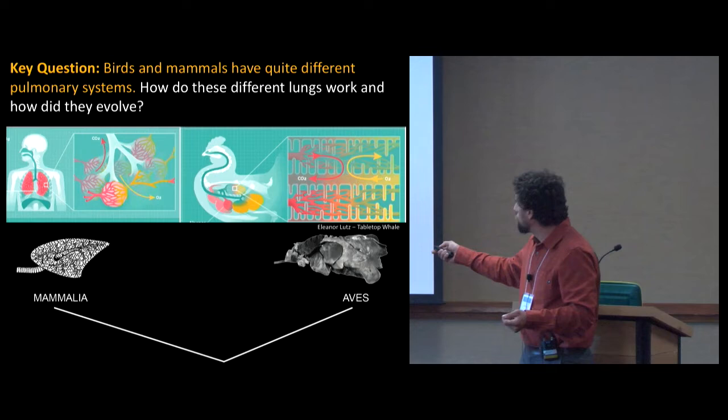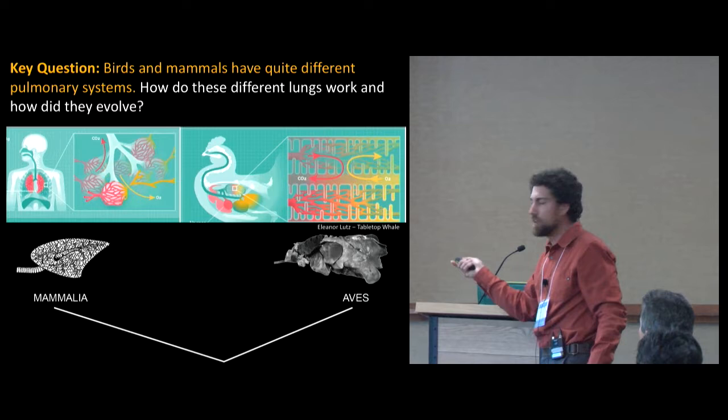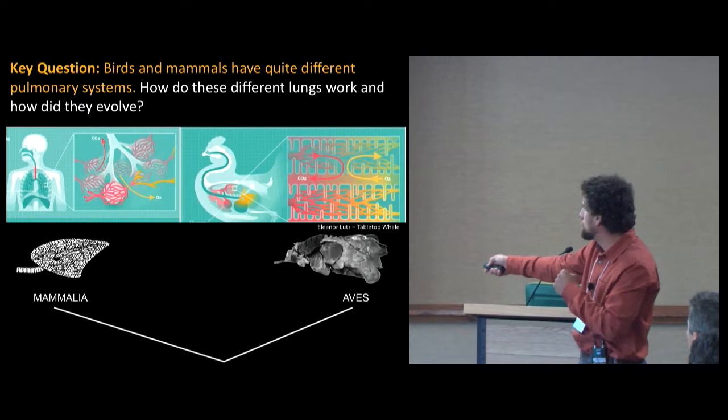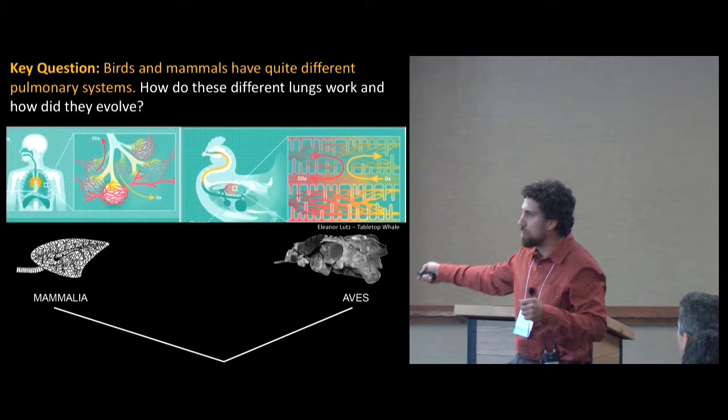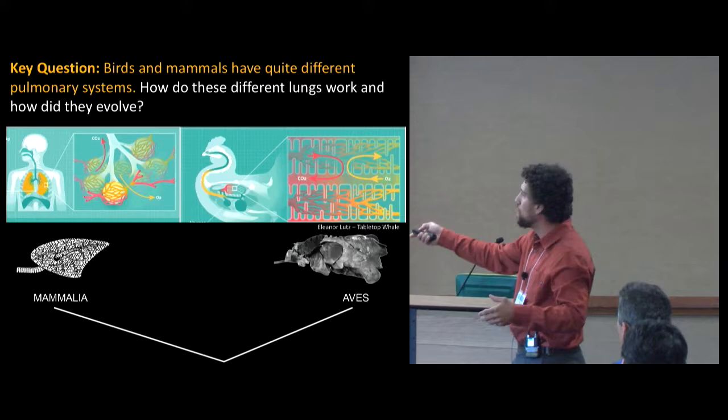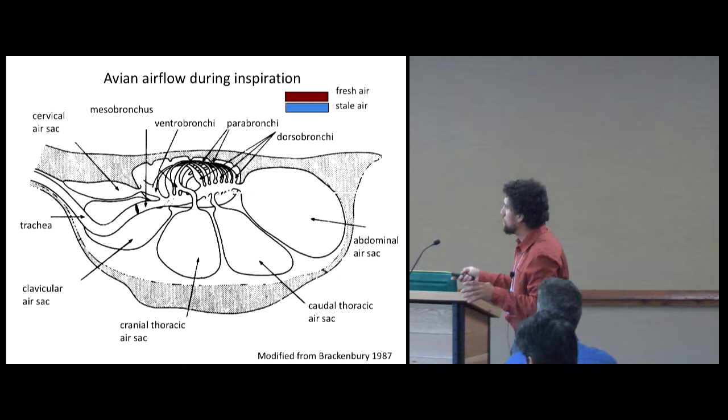Our key question is, birds and mammals have really different pulmonary systems. How do these different lungs work and how do they evolve? Your lung expands and contracts, air goes in all the way down your trachea to the terminal airways, and it takes the exact same pathway back out. It's kind of like a hollow tree. We'll call that a tidal lung. In contrast, the bird lung is really wacky and quite different. The lung itself is a small part of the body that doesn't expand and contract. It stays rigid. It consists of these tubes that run parallel from back to front, where air always goes in the same direction.